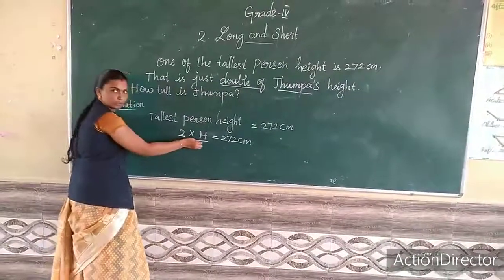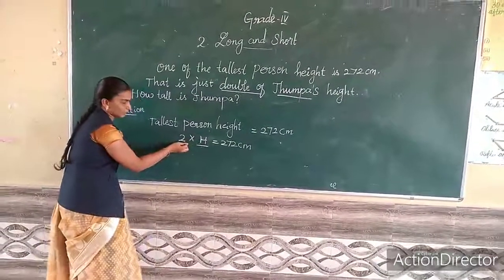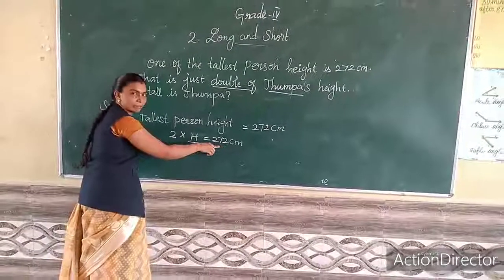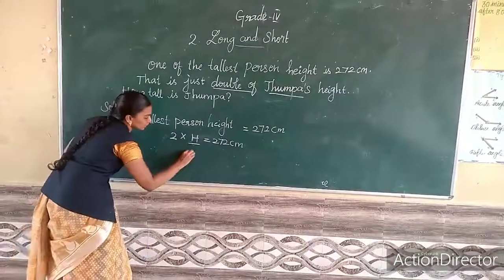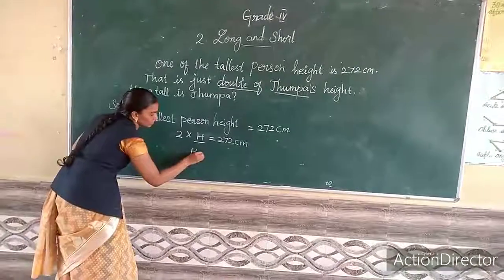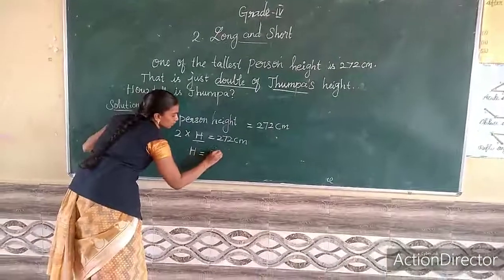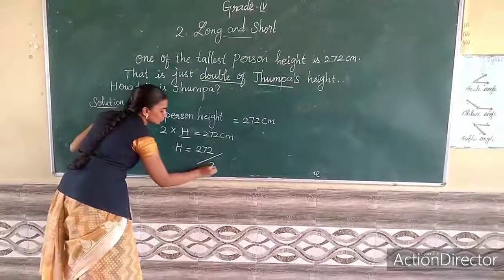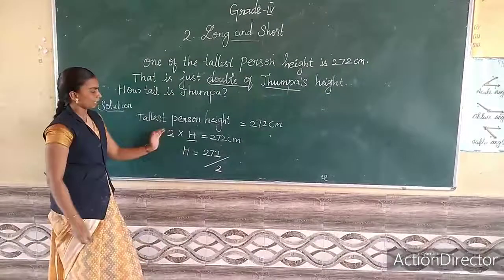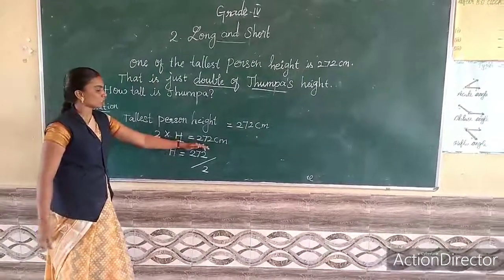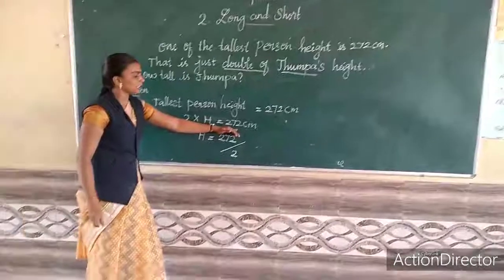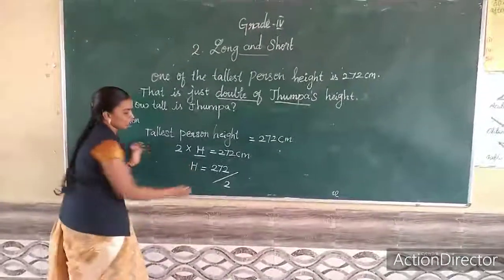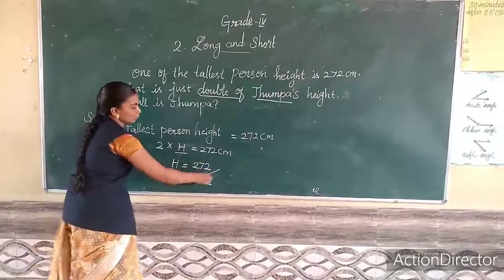We are going to find out Jumba's height using multiplication and division. If multiplication is on one side it will become divide when moved to the other side — the sign will be changed. So, 272 centimeters divided by 2. If it is multiplication going here and comes here, it will become divide. So 272 divided by 2.